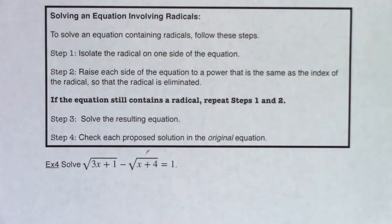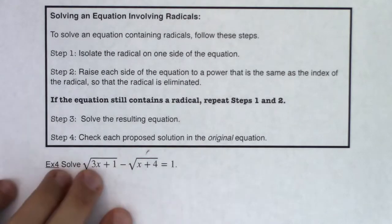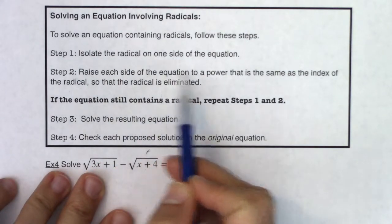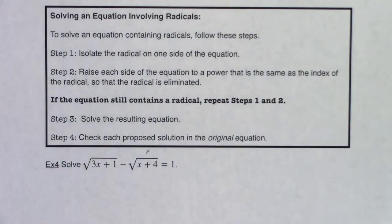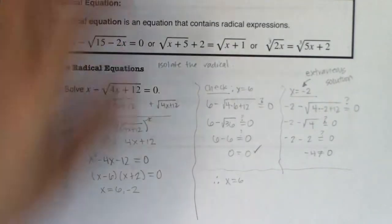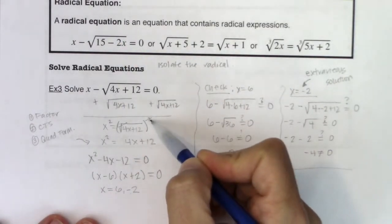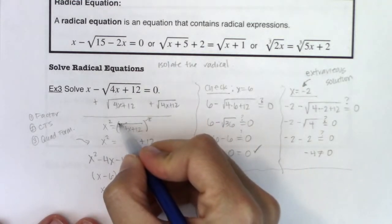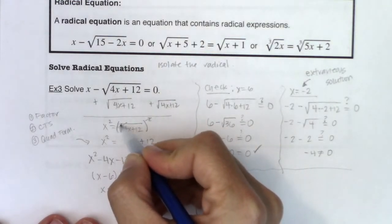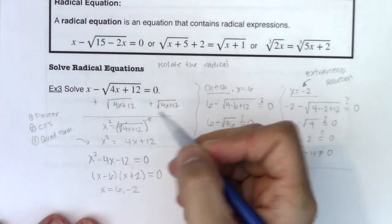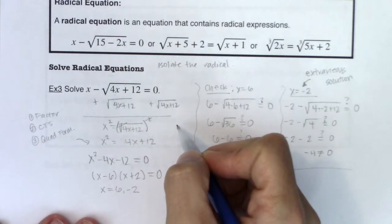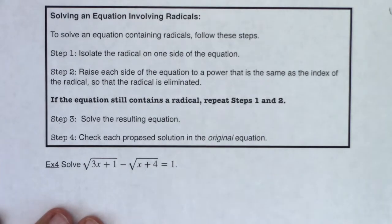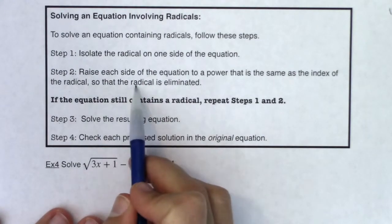Step 2 sounds the most convoluted, but we did it in example 3. Raise each side of the equation to a power that is the same as the index of the radical. After we isolated that radical in example 3, what did we do to both sides of the equation? We squared them. Why? Because the index of this radical, when we don't write a number, it's implied to be 2. So this was a square root, and we squared both sides because square rooting and squaring cancel each other out — they're inverse operations. That's how we picked squaring both sides, and we eliminated that radical.